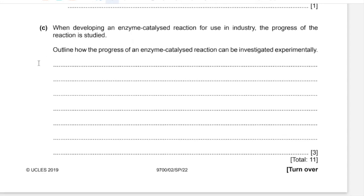Part C: When developing an enzyme-catalyzed reaction for use in industry, the progress of the reaction is studied — essentially how the rate of product formation changes with time. Outline how the progress of an enzyme-catalyzed reaction can be investigated experimentally. You need to observe dependent and independent variables. For independent variables, change a factor that affects enzyme activity, such as pH or temperature. For the dependent variable, observe the time taken for appearance of product or disappearance of reactant. Then plot a graph with time on the x-axis and product concentration on the y-axis.